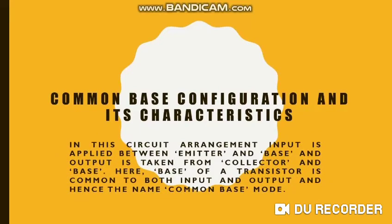In case of common base configuration, in this circuit arrangement, input is applied between emitter and base, and output is taken from collector and base. Here, base of a transistor is common to both input and output, and hence the name common base mode. Input is applied between emitter and base since base is common, and output is taken from collector and base. In both cases, base is the common terminal.